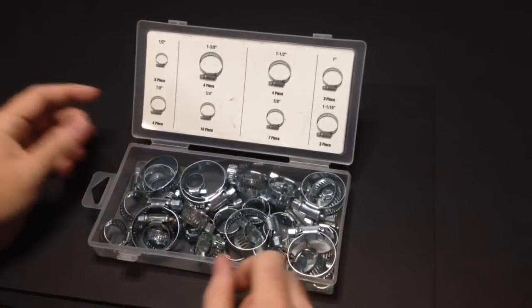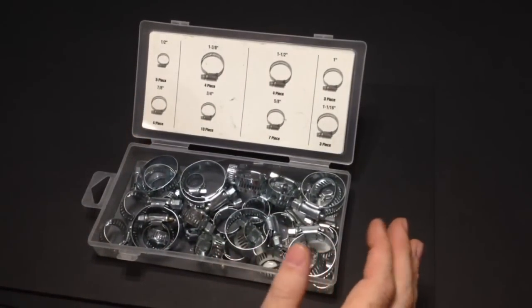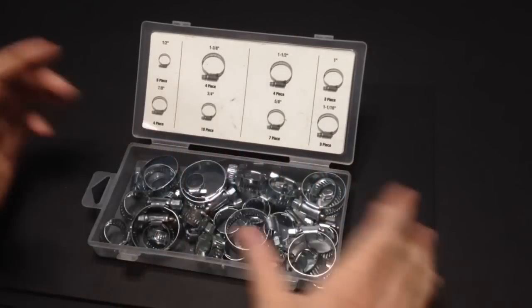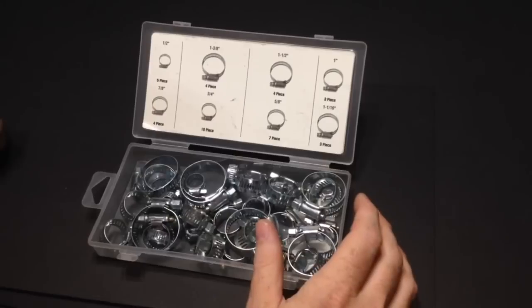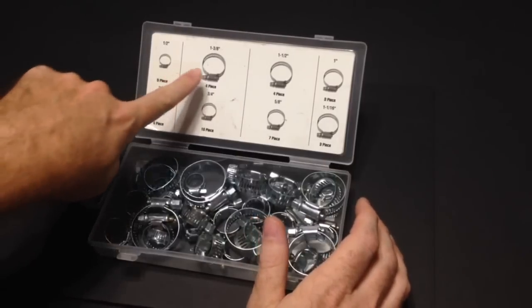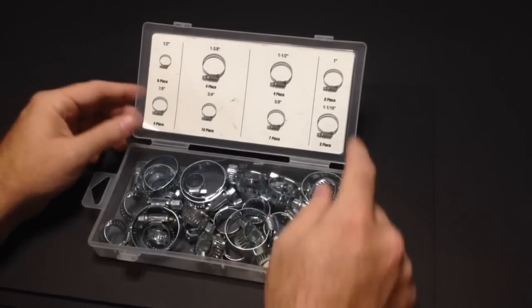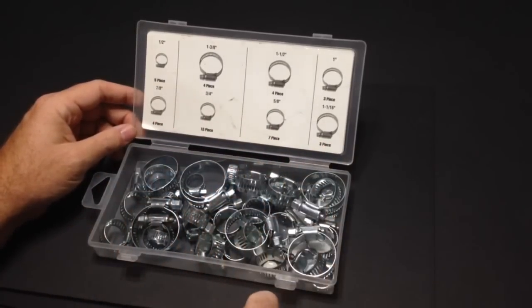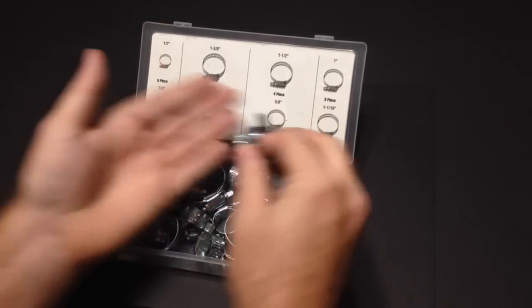These come in a nice little carry box so they're not spilling all over your toolbox. You flip it open and it has all these sizes. Keep in mind they have two different boxes. This is a smaller assortment with half inch, three-eighths inch and a half, one inch, seven-eighths, three-quarter, five-eighths, and inch and a sixteenth.